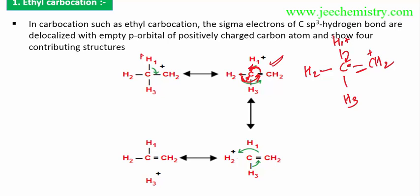In a similar way, this bond shifts to this position and this compound is formed. Similarly, S2 and S3 are also happening in this way — three structures are forming as hyperconjugating structures. One is the aliphatic structure, so total four hyperconjugating structures for ethyl carbocation.